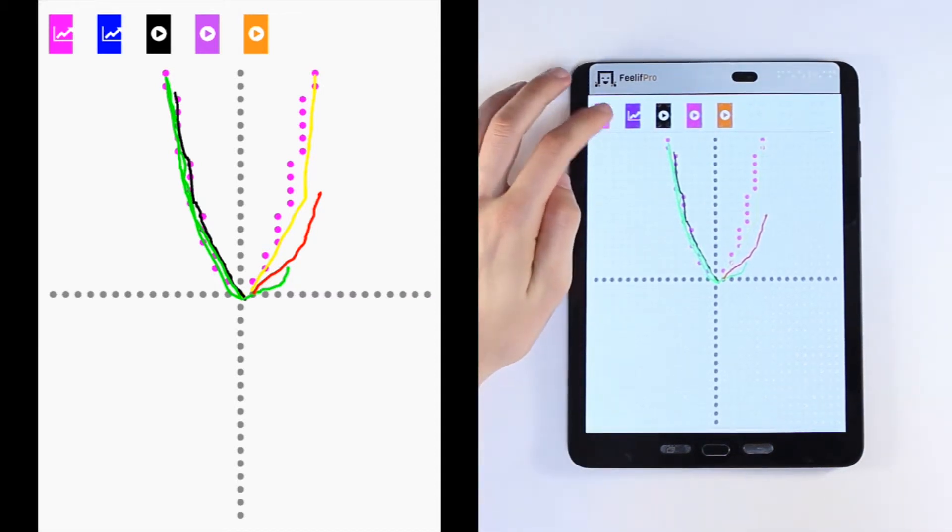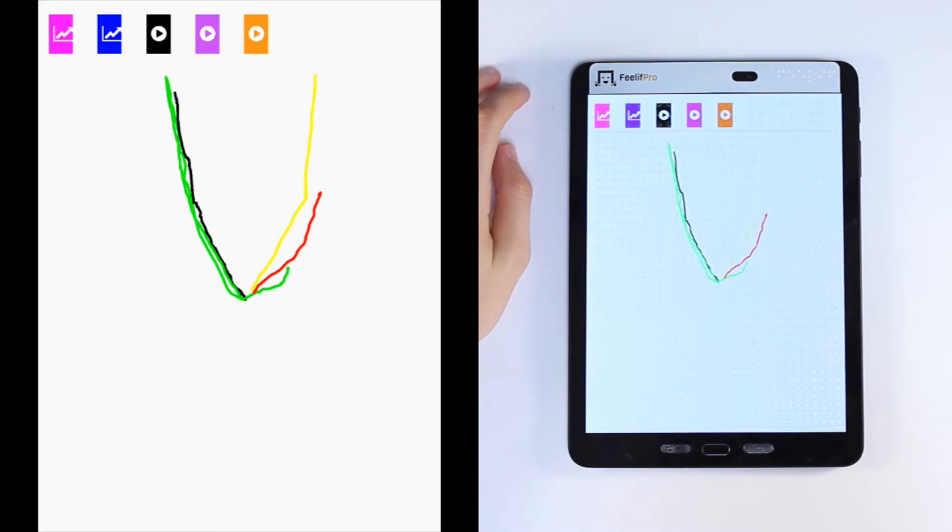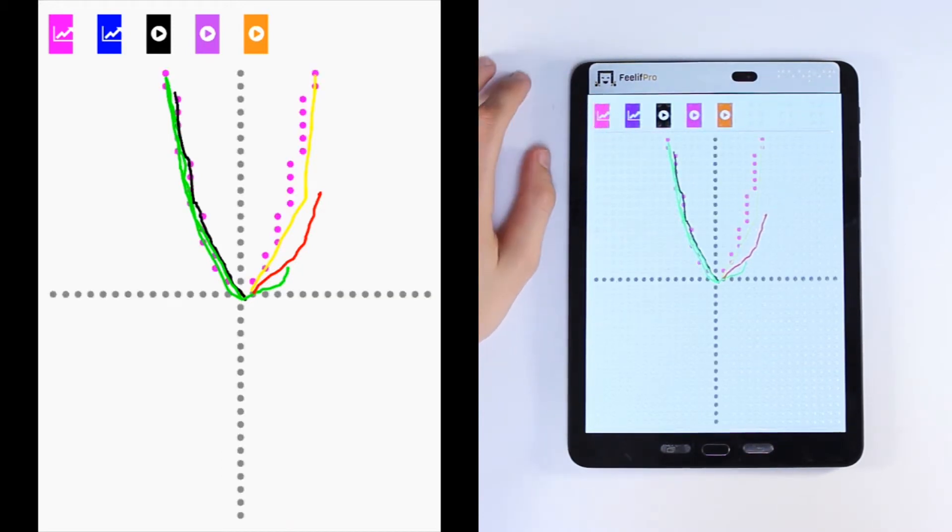You can hide all the function dots to get a better view of the user's line by double tapping the first button. You can also hide the function line by double tapping the second button.